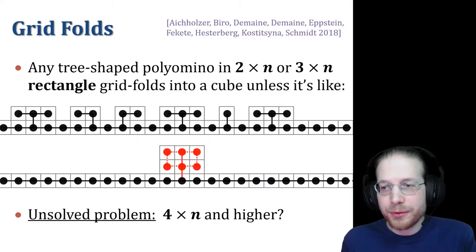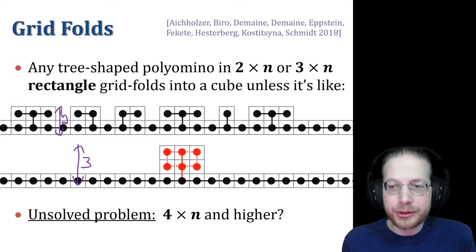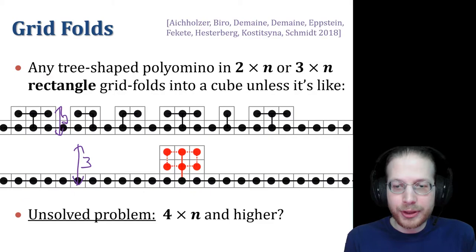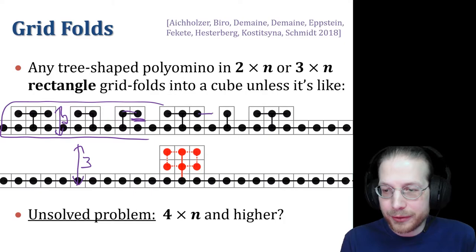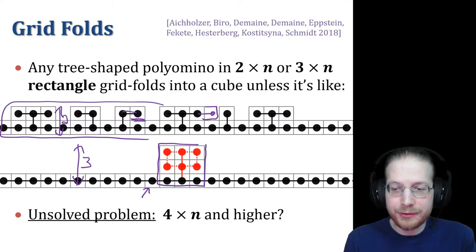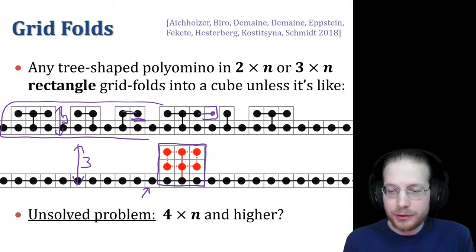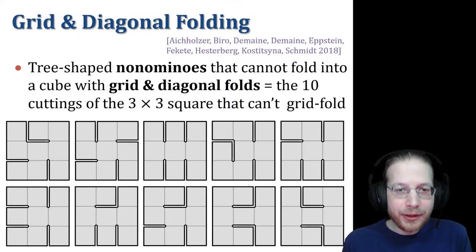So all these models have been considered. For grid folds, there's a partial characterization. If you restrict to polyominoes that have height 2 or have height 3, there's an efficient algorithm to tell you whether your polyomino will fold into a cube, only folding along grid lines. It turns out this giant polyomino, despite being so big, cannot fold into a cube. But if I added, for example, another pixel like this, it could. And this polyomino, 3xn, also does not fold into a cube.